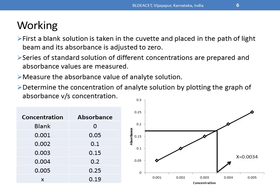Now we will see how the colorimeter works. In order to find out the concentration of an analyte solution, first we have to prepare a blank solution. The blank solution is a colorless solution, and using it we set the absorbance value to zero, because only colored solutions absorb light — since the blank solution is colorless, its absorbance value is set to zero. Then we prepare a series of standard solutions of different concentrations of the analyte and measure the absorbance value of all the standard solutions, and after that we measure the absorbance value of the unknown analyte solution.